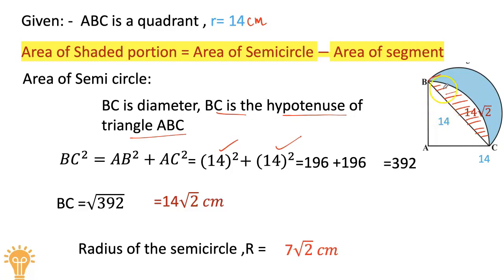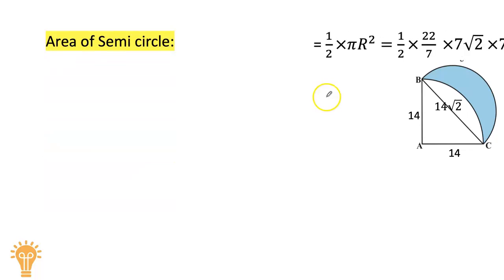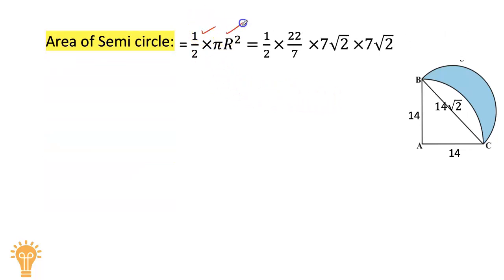Now we have to find the area of the semicircle. Area of semicircle equals ½πr², which is ½ × 22/7 × 7√2 × 7√2. After doing the cancellations, the result is 154 cm² as the area of the semicircle.